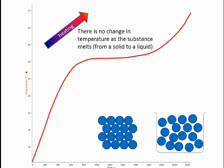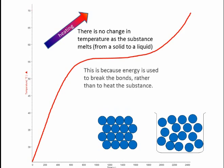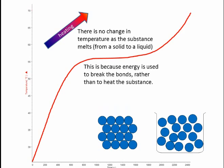There's no change in temperature as the substance melts from a solid to a liquid. This is because the energy being supplied is used to break the bonds, rather than simply to heat the substance.